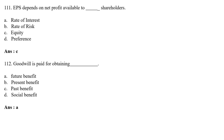Goodwill is paid for obtaining — Option A: future benefit; Option B: present benefit; Option C: past benefit; Option D: social benefit. The correct answer is Option A — future benefit. Goodwill is paid for obtaining future benefit.